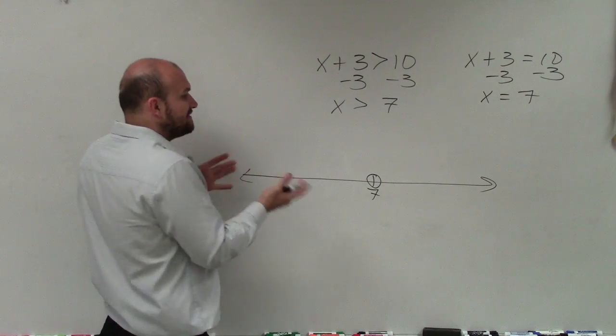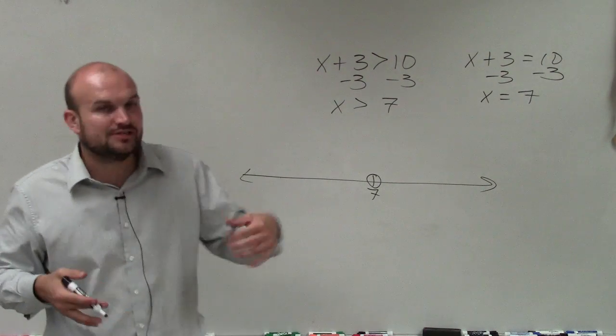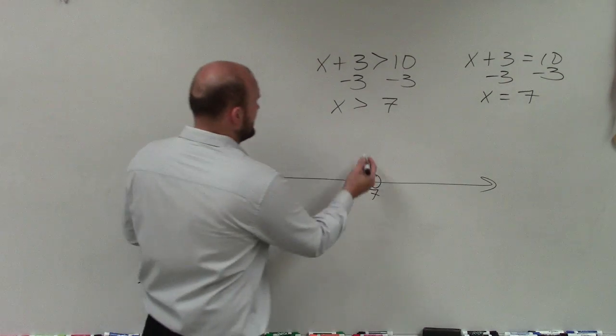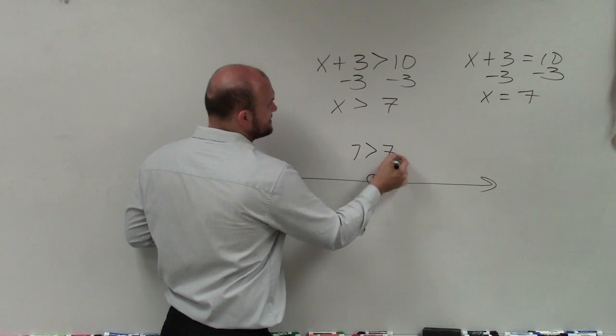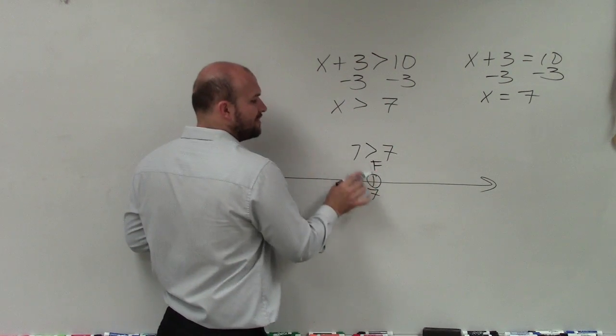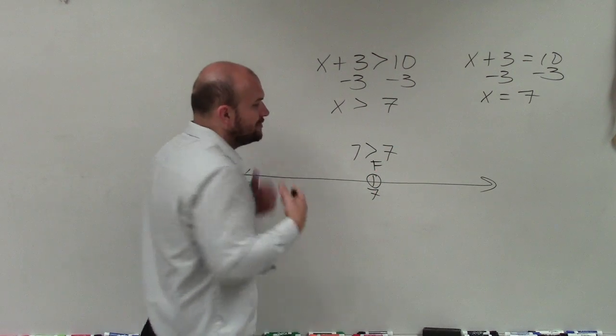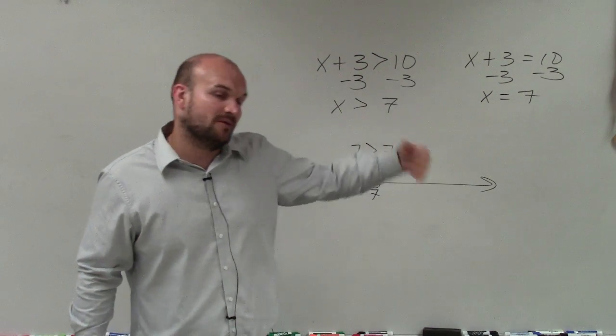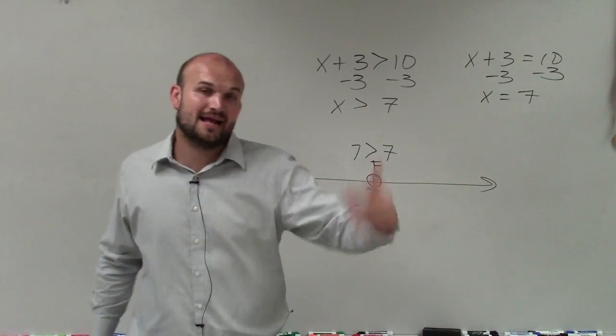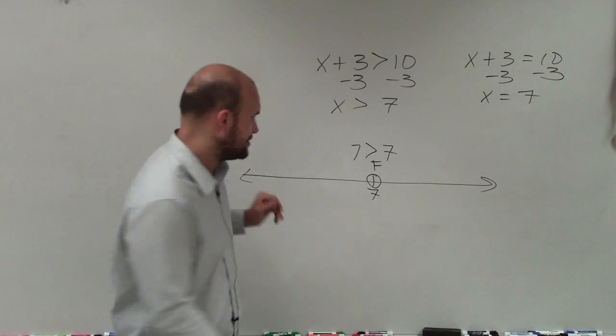Then to determine if it's going to be closed or open, I need to test that point. So I'll evaluate for 7 into my inequality. Is 7 greater than 7? And that is false. Therefore, my point is going to remain open. You can also know that any time it's greater than or less than, then it's always going to be open. But when it's greater than or equal to or less than or equal to, it's going to be closed or a part of the solution.